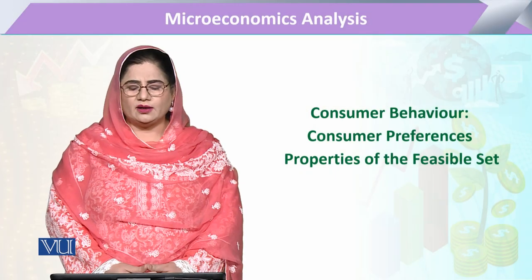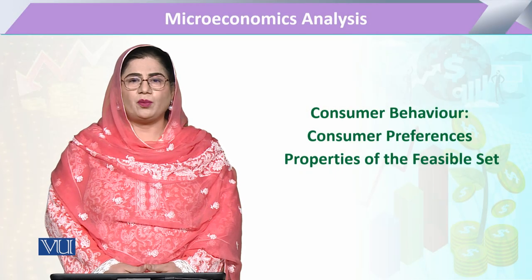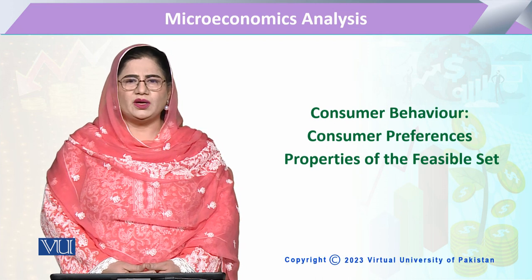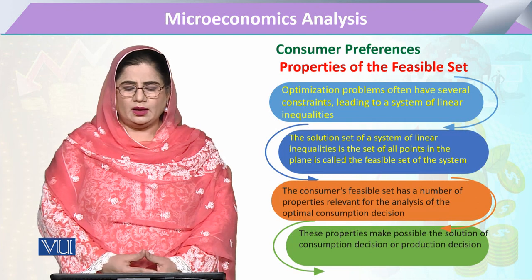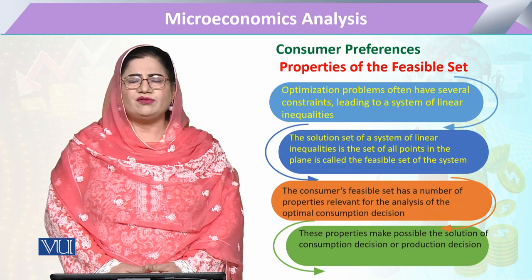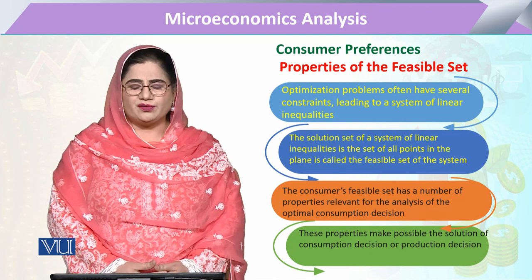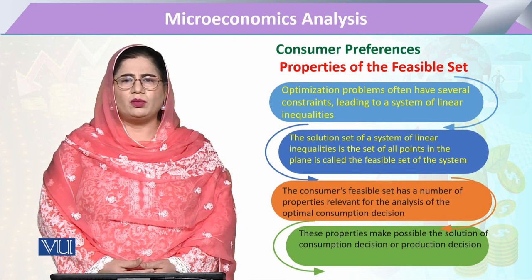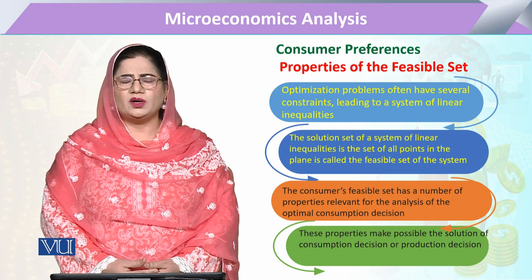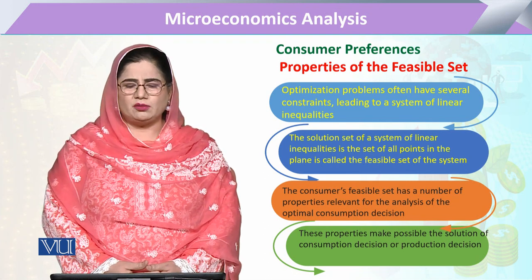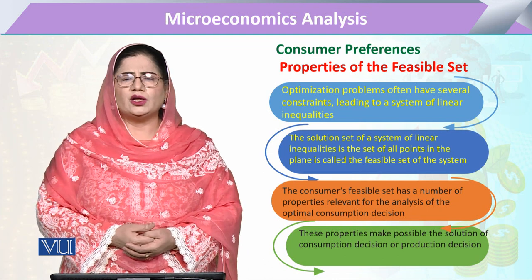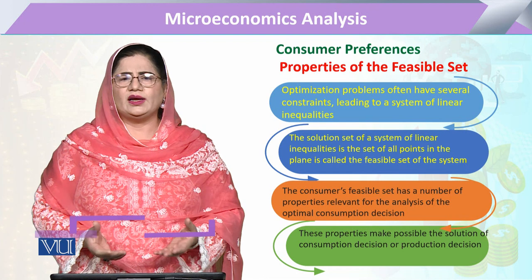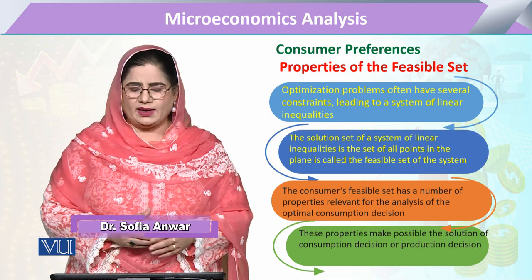We will study consumer preferences and properties of the feasible set under the chapter of consumer behavior. The main problem faced by a consumer is optimization — the optimization of resources to attain all wishful goals, or we can say the multiple ends.